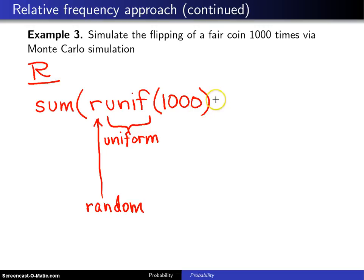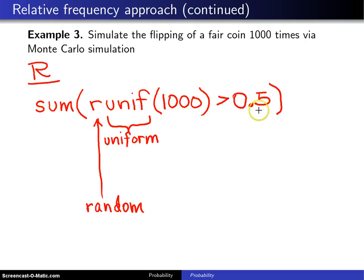These are random numbers equally likely between 0 and 1. If we arbitrarily assume that values greater than 0.5 correspond to heads, then we generate a vector of 1,000 trues and falses — trues corresponding to heads and falses to tails. When you add those up with SUM, you get the number of heads in 1,000 tosses, which is X from the definition. Finally, divide by the number of trials — 1,000 — and that simulates the flipping of a fair coin 1,000 times and estimates the probability of heads.